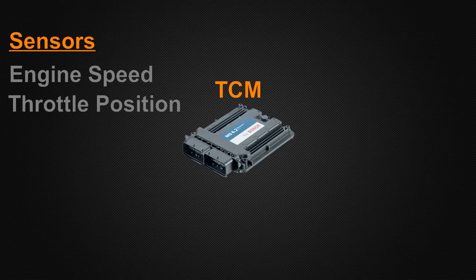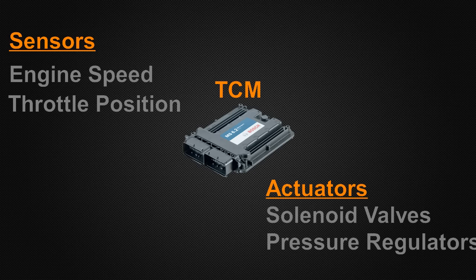It's also going to use information from the throttle position sensor. The throttle position sensor tells the transmission control module how aggressively you're driving. So the more aggressively you're driving, it's going to try to change gears at higher revs. This transmission control module operates the transmission by activating different solenoids and by varying the different pressures within the system through some pressure regulators.